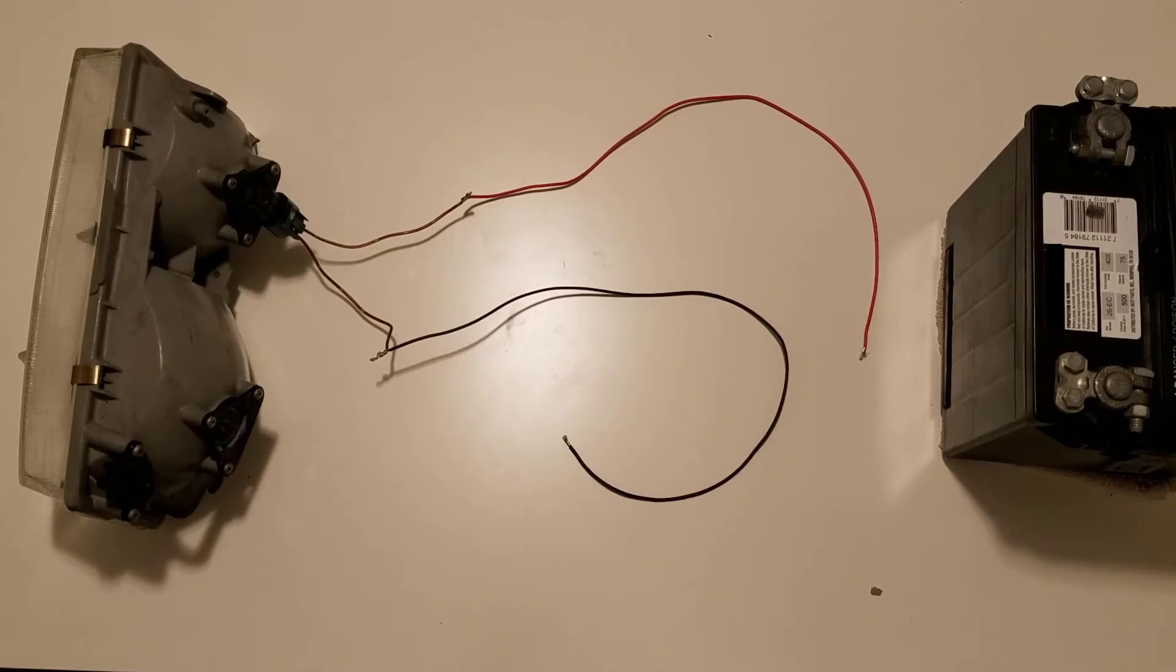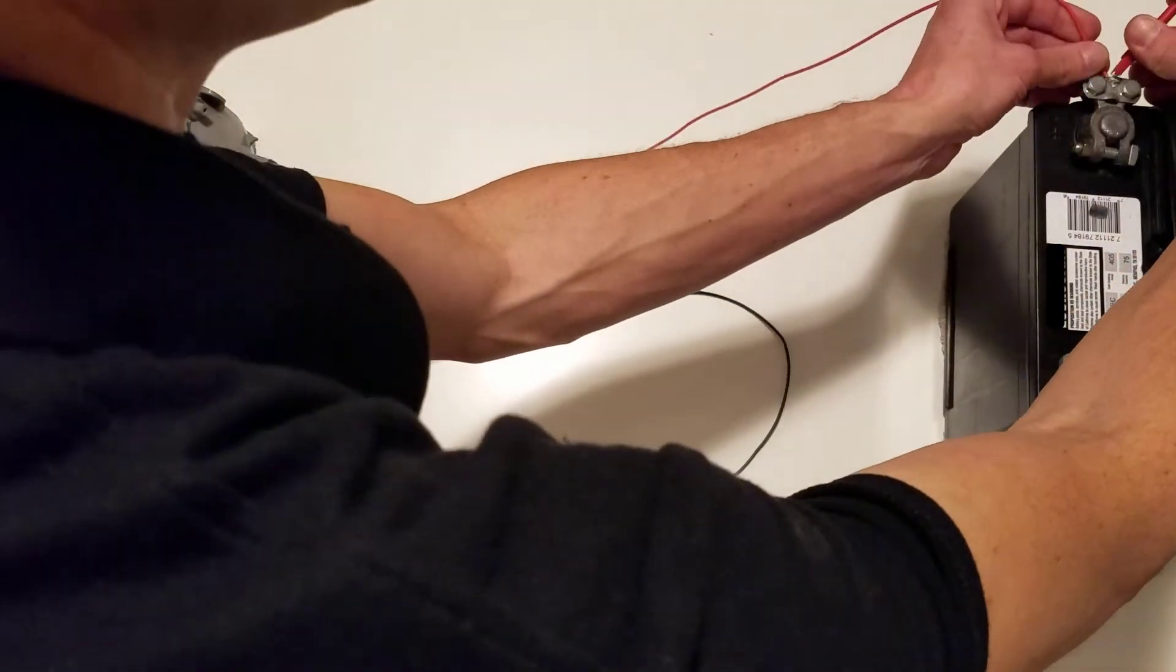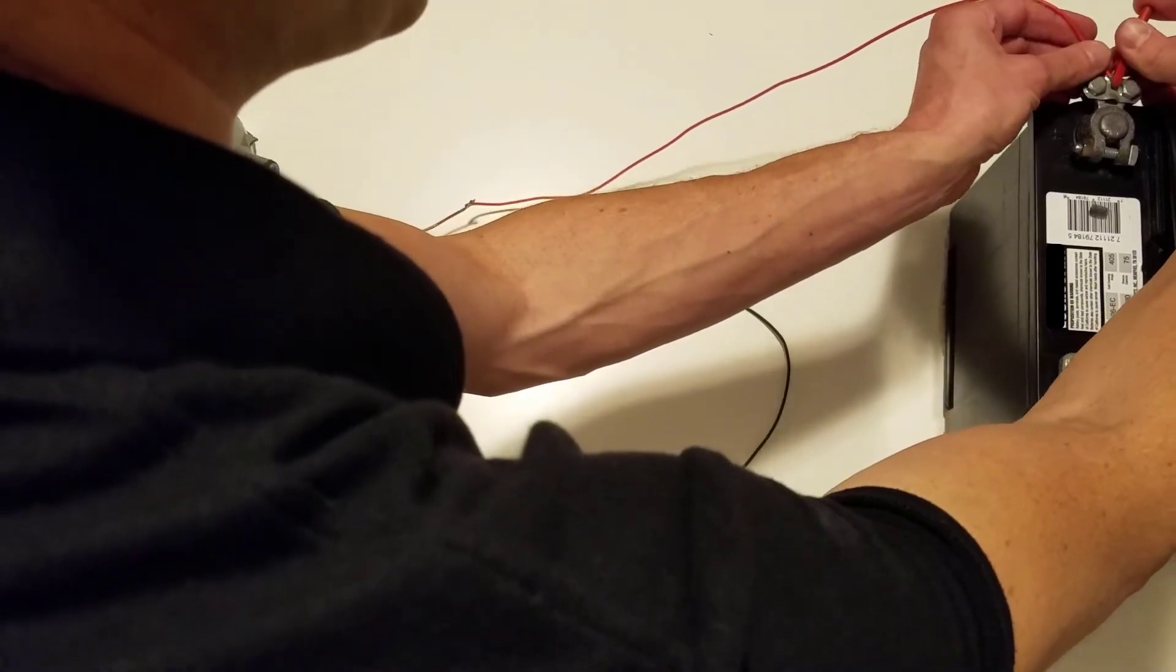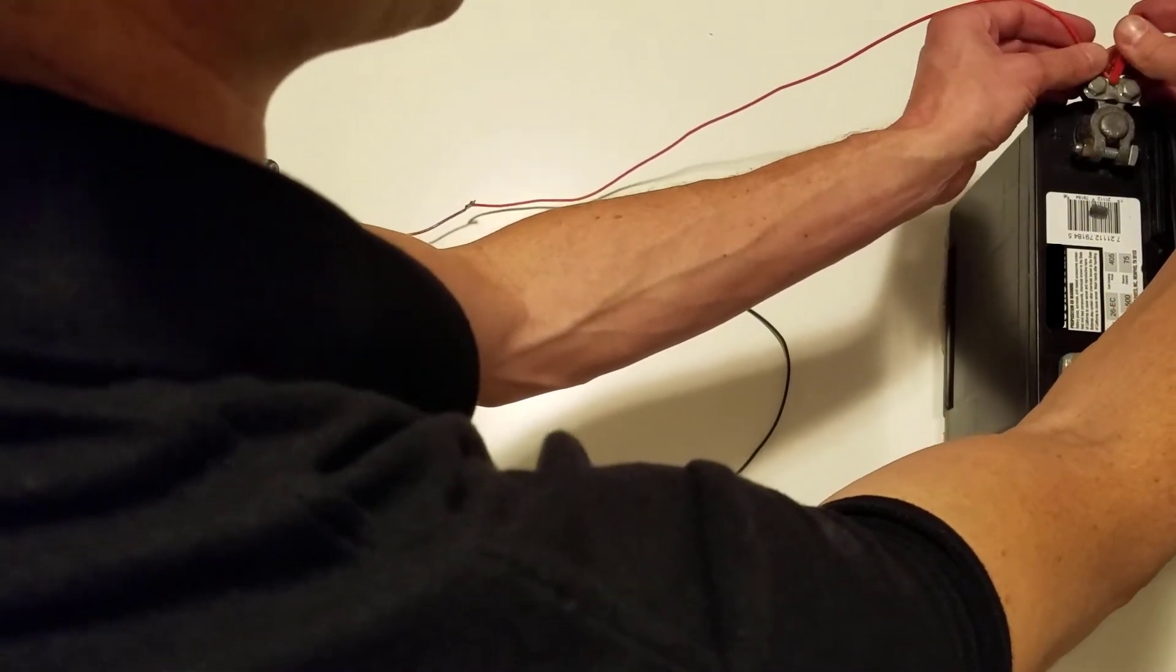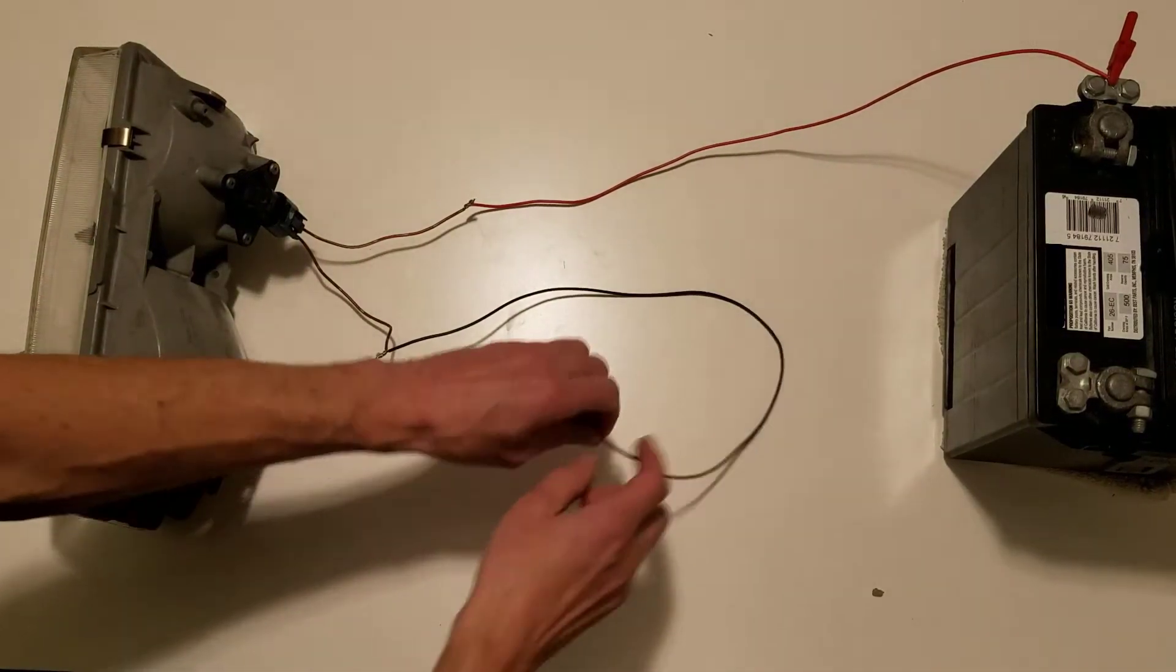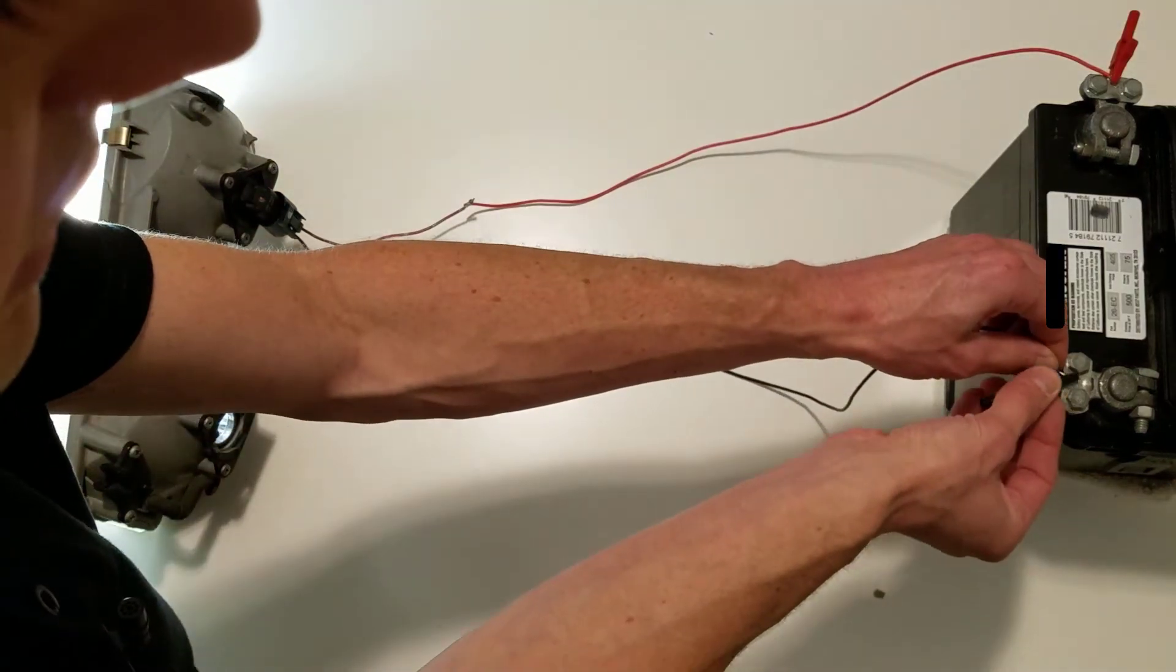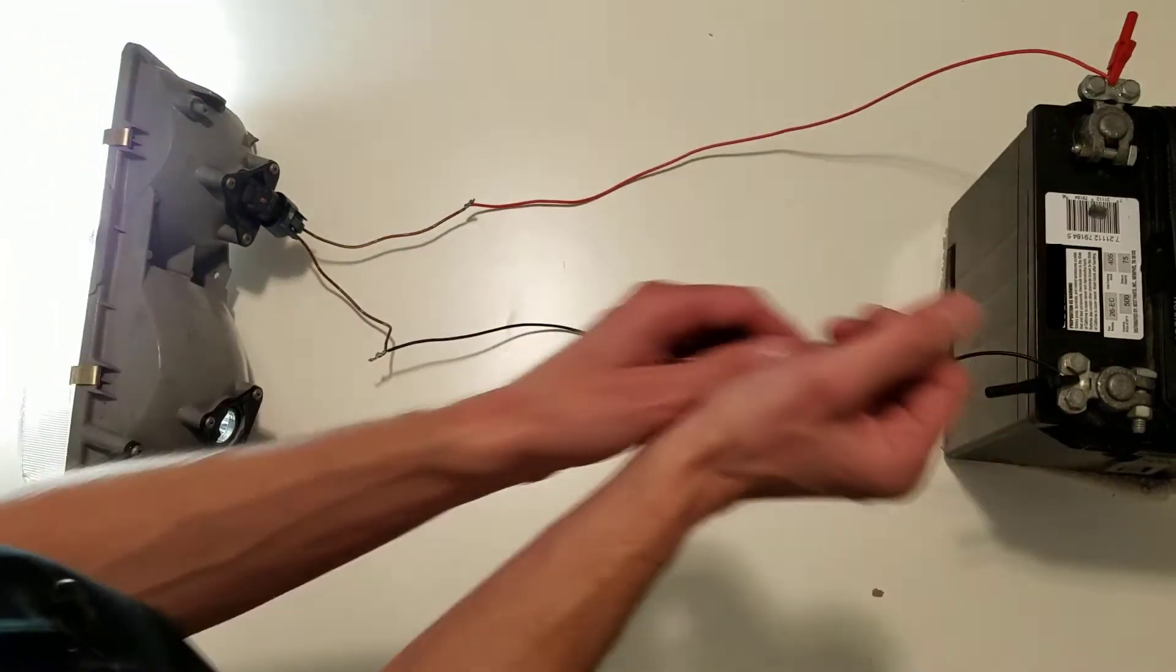I'm going to connect the positive side of the headlight first. And again, not the best way to do it. We're definitely getting some intermittent connections here just because it's not really meant for that, but it'll work for this demonstration. As soon as I connect the negative side, we'll see that the headlight comes on.